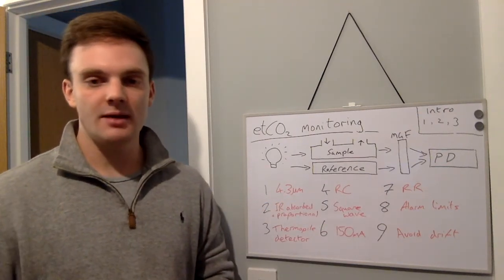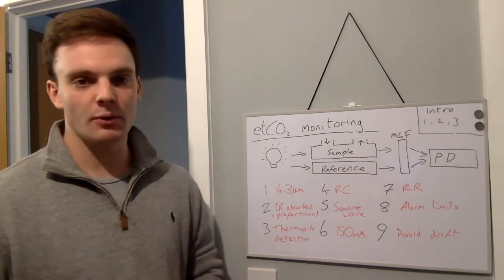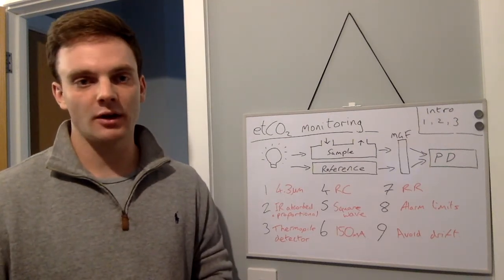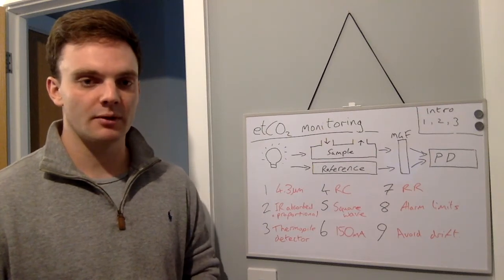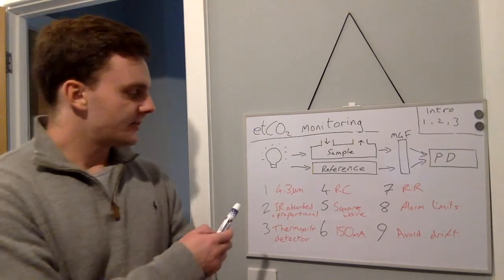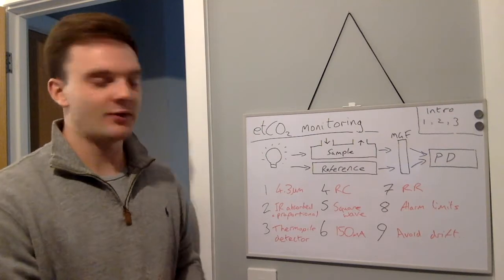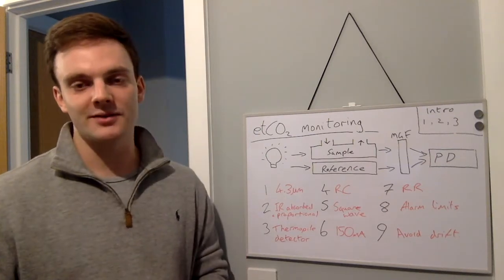For me, I've gone through the process at nine points in order to try and include everything that's important with end tidal CO2 analysers. So the first point: CO2 molecules absorb infrared light at a wavelength of 4.3 micrometres.